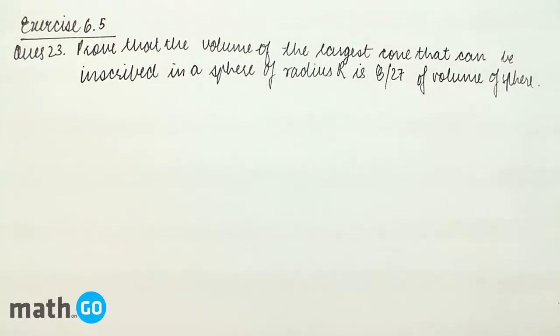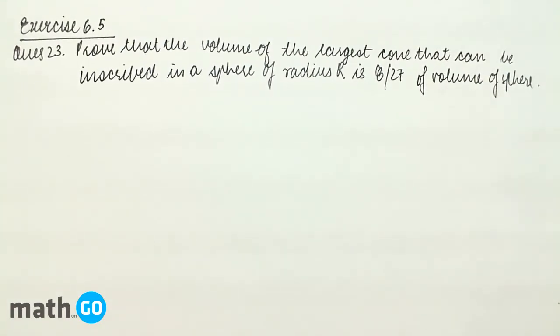Exercise 6.5, question number 23. It says: Prove that the volume of the largest cone that can be inscribed in a sphere of radius R is 8/27 of the volume of the sphere.